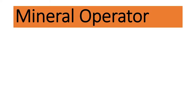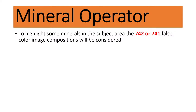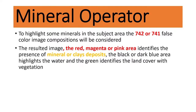Regarding mineral operators — how we can use different types of mineral operators — to highlight certain minerals in the subject area, we can use the band combination 742 or 741, which is the Landsat ETM sensor band combination. False color image composition will be considered when you want to highlight minerals in your area. I will show you practically how to get this band combination and display the result.